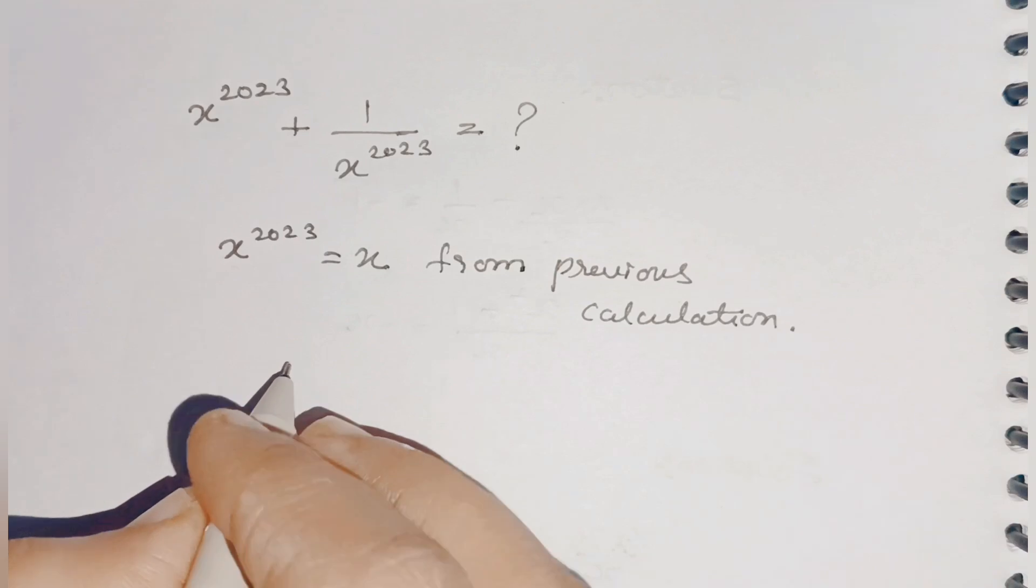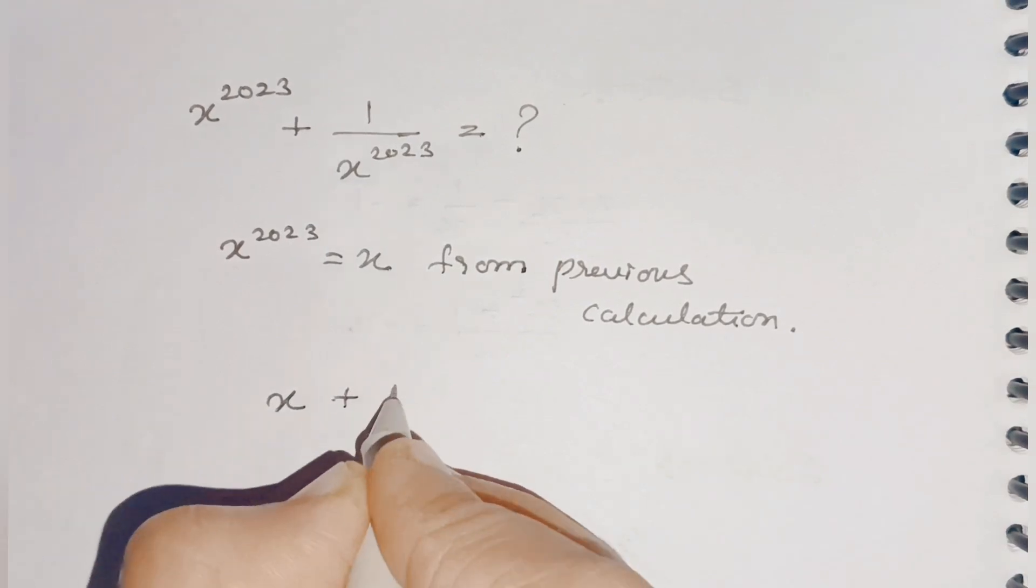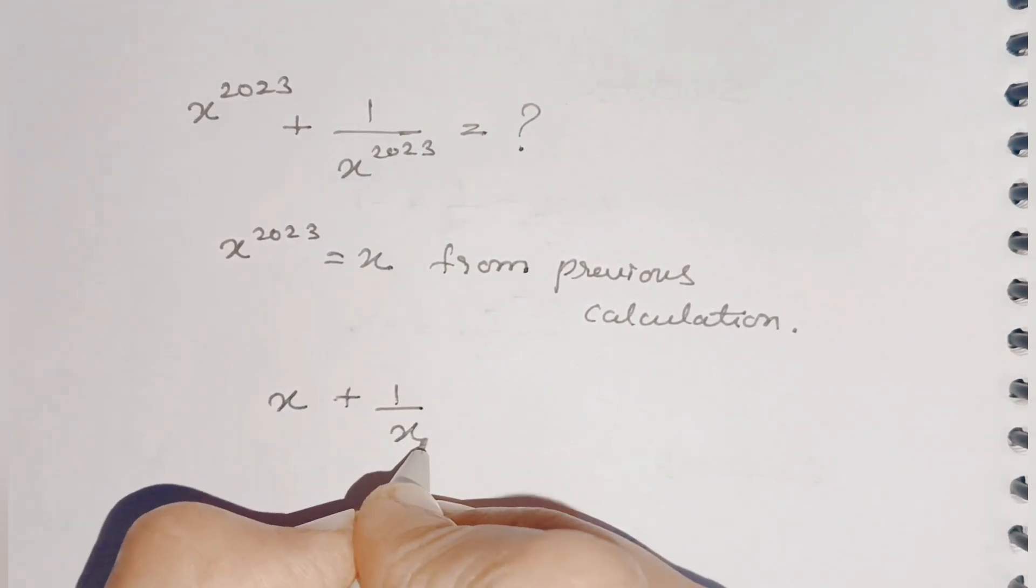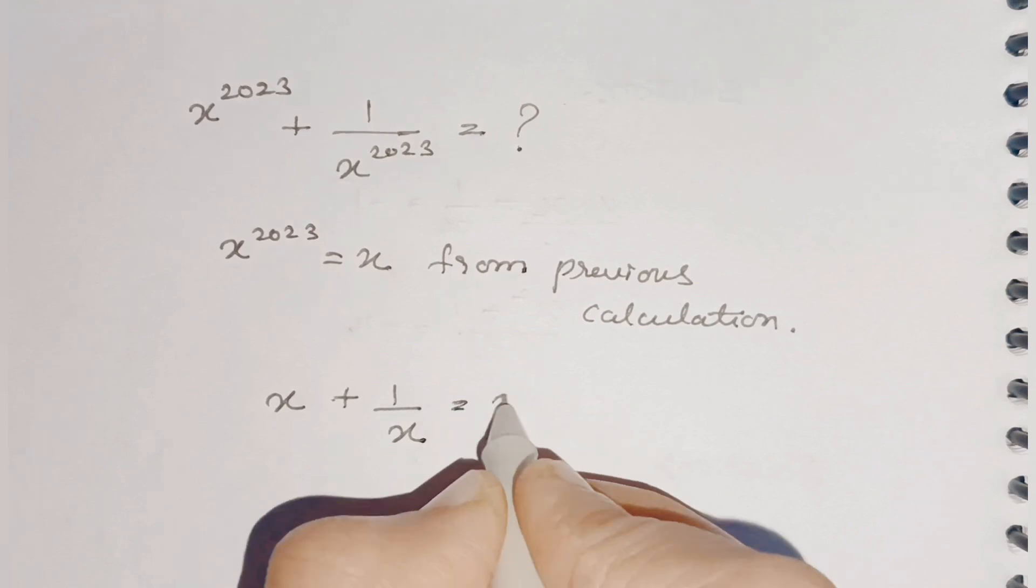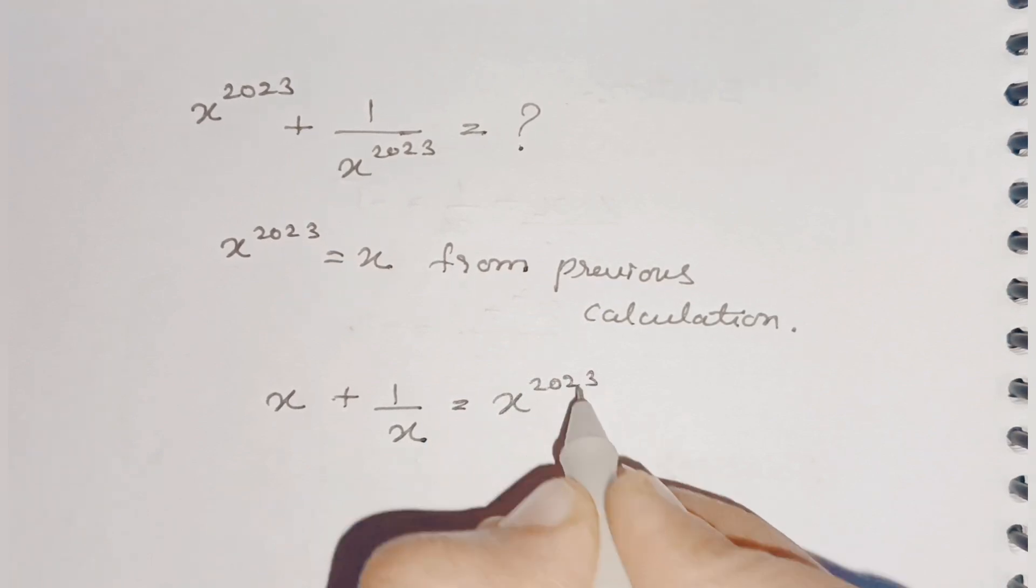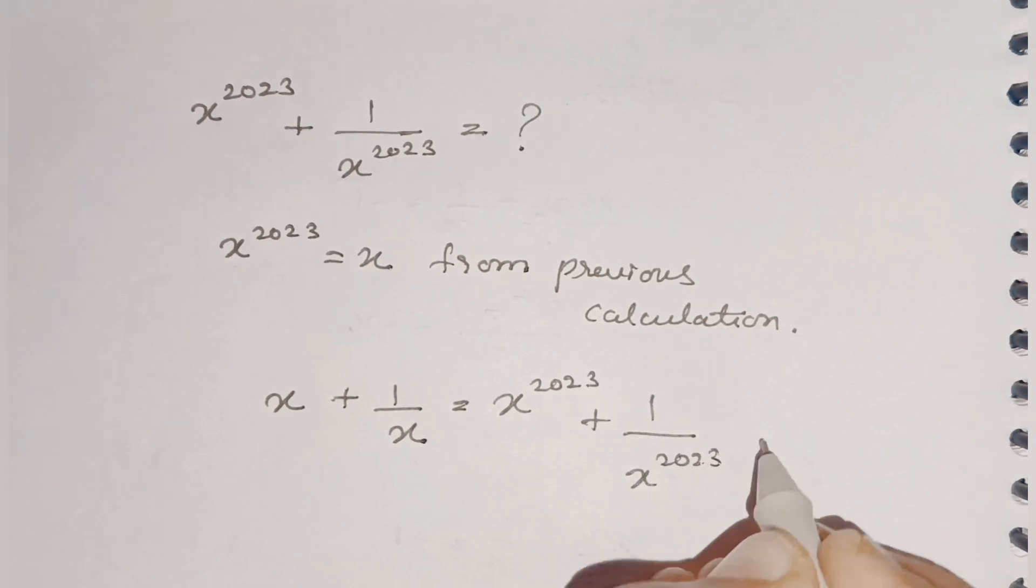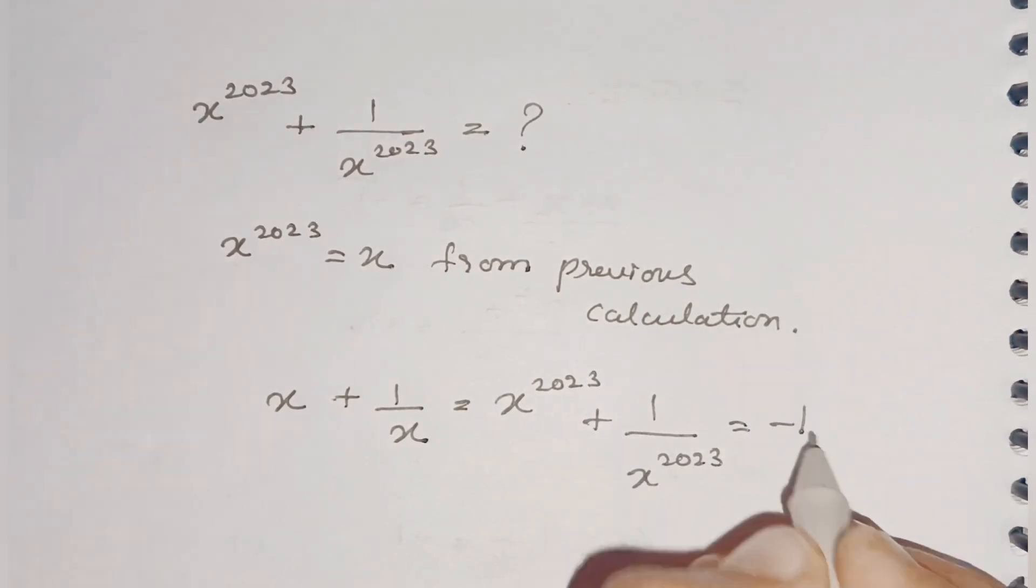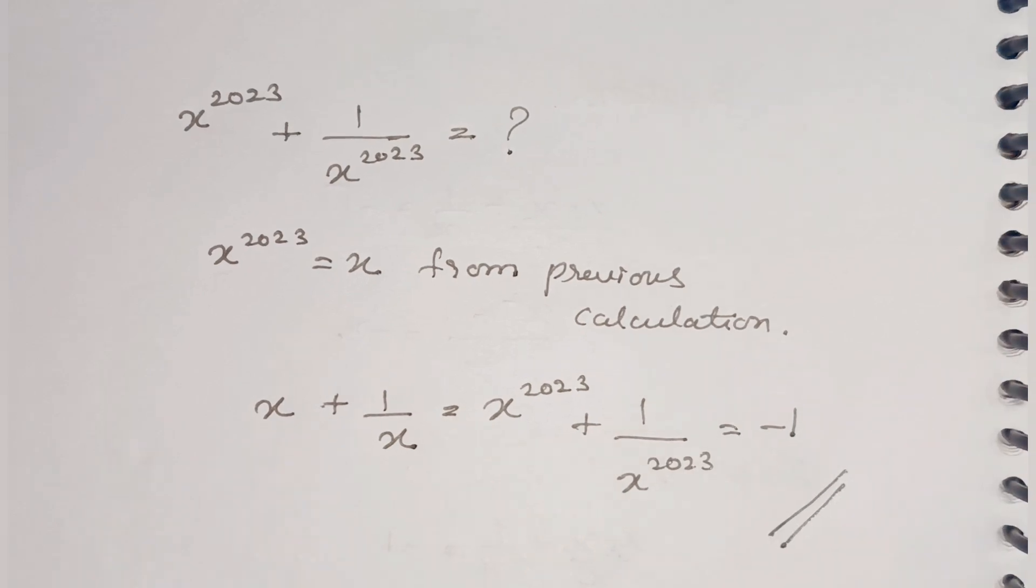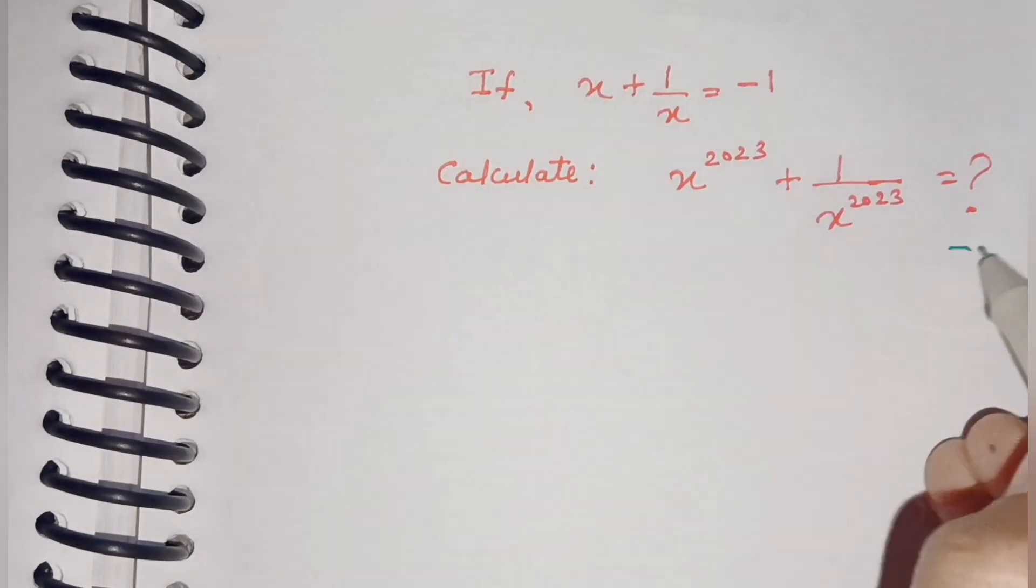Therefore, we can write x + 1/x = x^2023 + 1/x^2023 = -1. Let's write our final answer, which is -1.